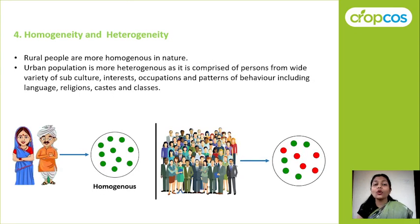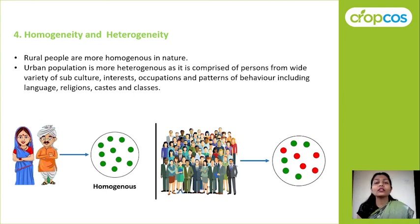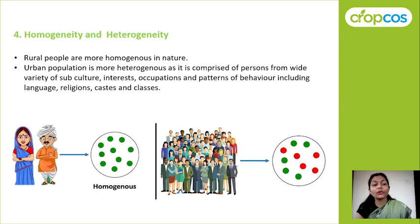Next is homogeneity and heterogeneity. Homo means same and heterogeneity means different. Rural people are more homogeneous in nature — their living style, experiences, occupation, pattern of behavior, culture, and value system are almost the same. Moreover, the community is very small, so their interests, caste, and religion are generally the same. Rural people are homogeneous in nature.